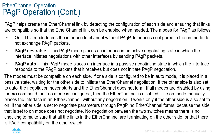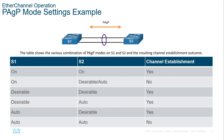What happens if two switches are in different modes? If Switch 1 is On and Switch 2 is On, channel is established. If Switch 1 is On and Switch 2 is Desirable or Auto, no channel establishment. If both are Desirable, establishment. Desirable and Auto: establishment. Auto and Desirable: establishment. Auto and Auto: no establishment. You do need to know these charts for PAGP and LACP because they tell you how the ports negotiate.